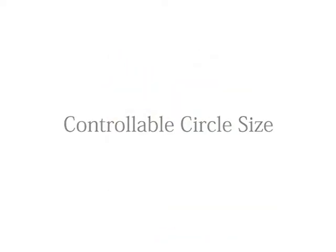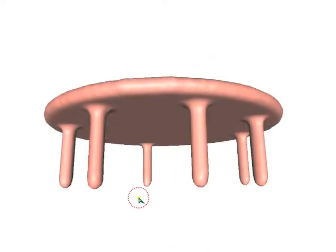In general, the default size dot circle suffices to segment most models. However, we allow the user to change the circle size using the mouse wheel for two purposes.